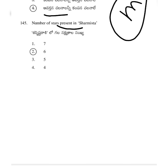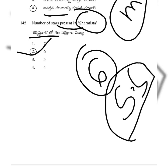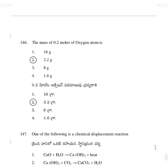Number of stars present in Charmista constellation. The answer is option 2 — six. Six stars are present in the Charmista constellation. Solar system questions are also included in this topic.